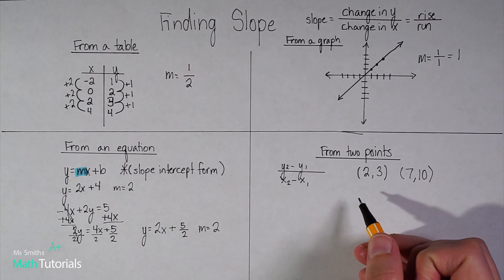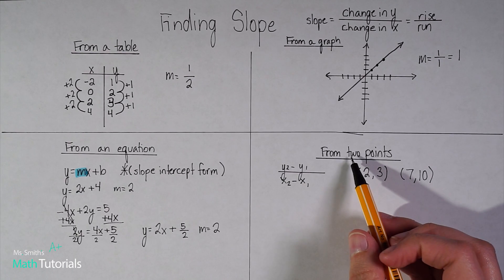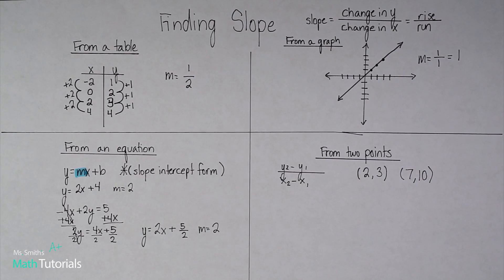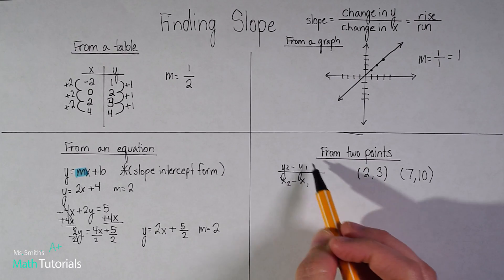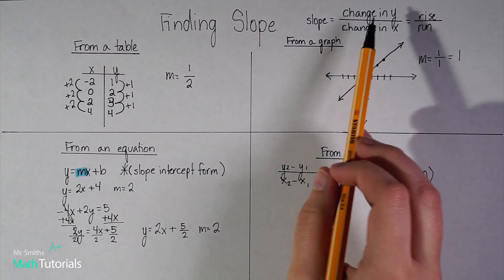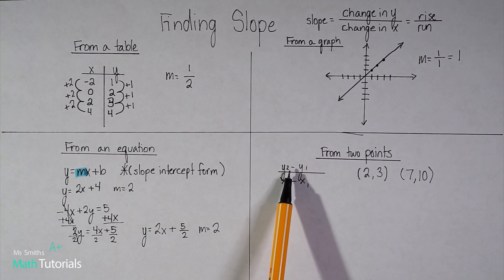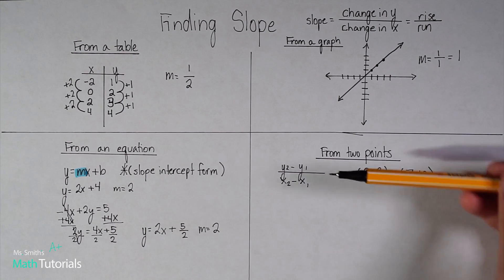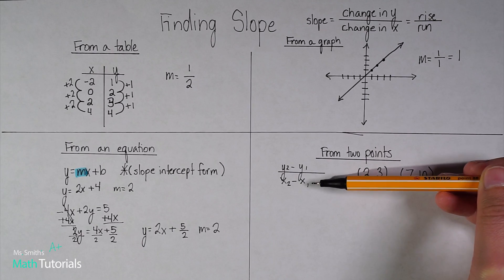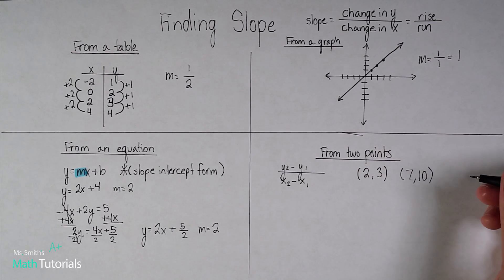The last way that we are going to learn to find slope would be given two points. So as long as you've got two points, I could tell you the slope. There's a formula you have to know. It's essentially the change in y over the change in x. It's y2 minus y1 over x2 minus x1. It's just another way of saying change in y over change in x.